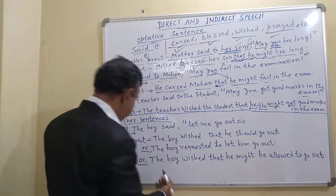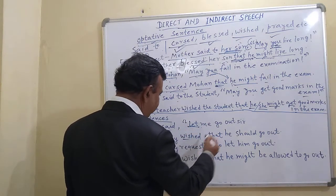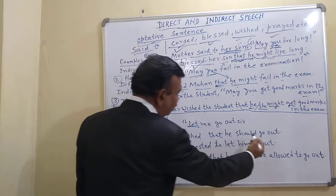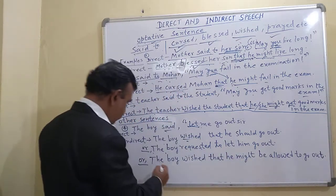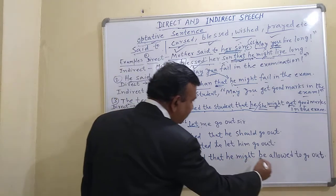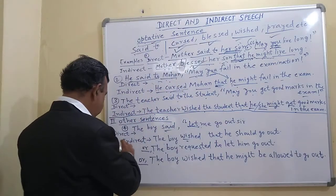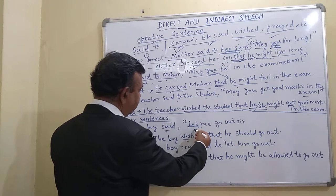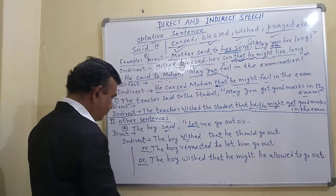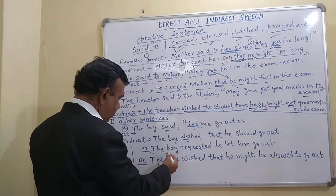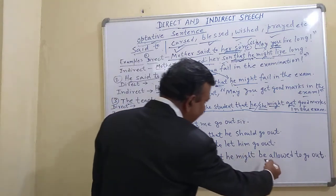When a sentence starts with 'let,' for example: 'The boy said, let me go out sir.' Here 'said' changes to 'wished.' This can be changed in different ways: 'The boy wished that he should go out,' or 'The boy requested to let him go out,' or 'The boy wished that he might be allowed to go out.' So sentences that start with 'let' can be converted in multiple ways.